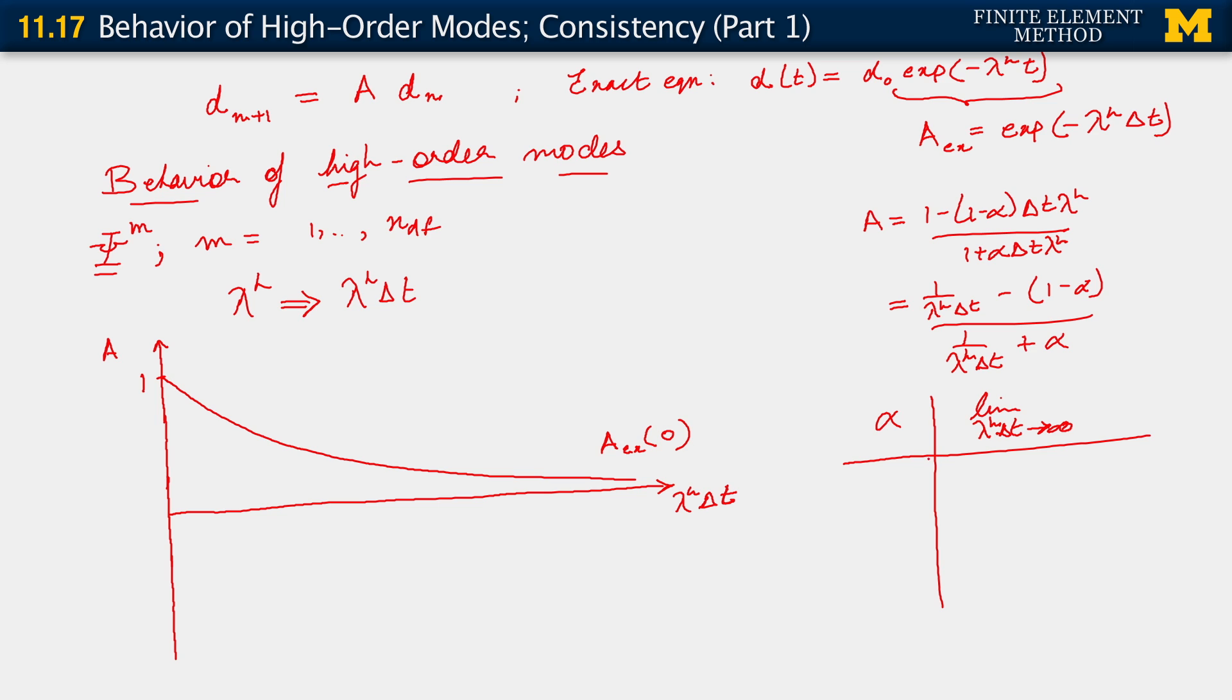Let's start at the top of the range of alpha, say alpha equals 1. For alpha equals 1, when lambda h delta t tends to infinity, if you look at that limit, you basically get 0.